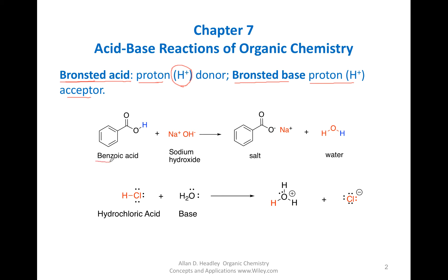Here is a reactant, benzoic acid — the name gives it away as an acid — and here is sodium hydroxide. The question is, which is the acid and which is the base? Benzoic acid goes to the benzoate salt, so this hydrogen is gone going from reactant to product — that is giving up its proton, so this is the acid. NaOH's OH picks up this proton to form water, so this is the base because it accepted a proton.